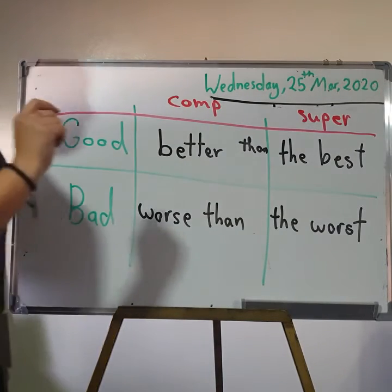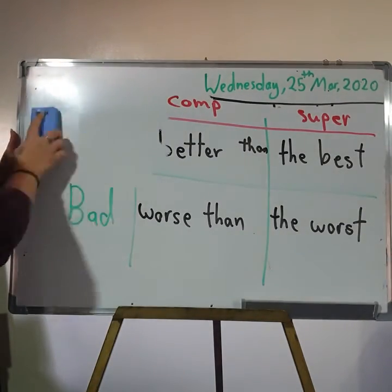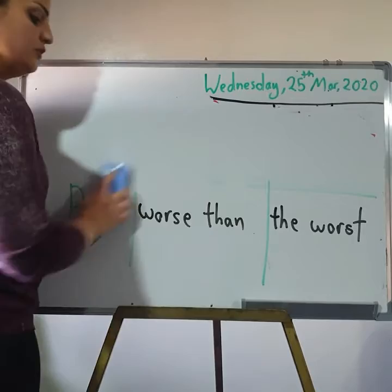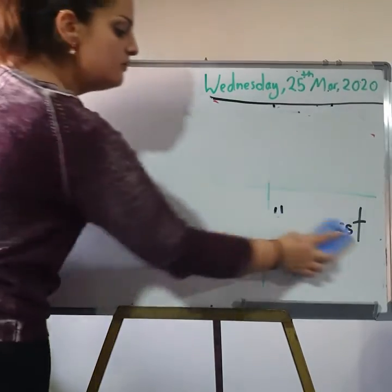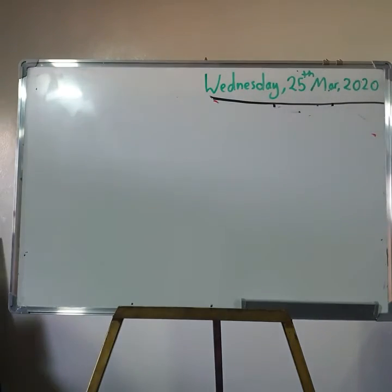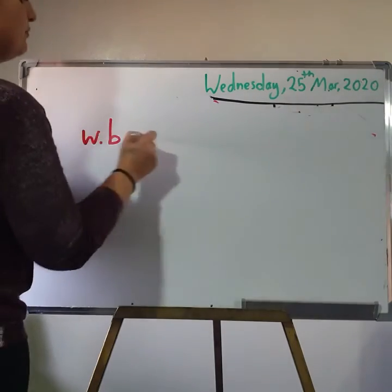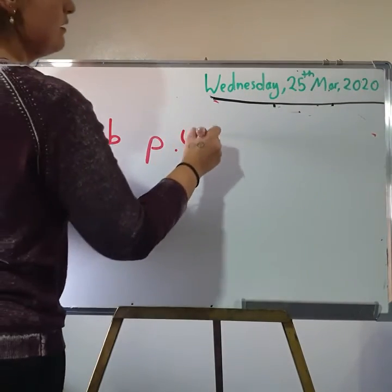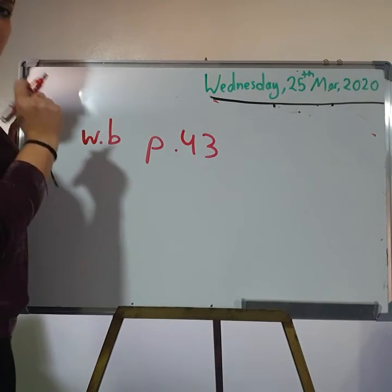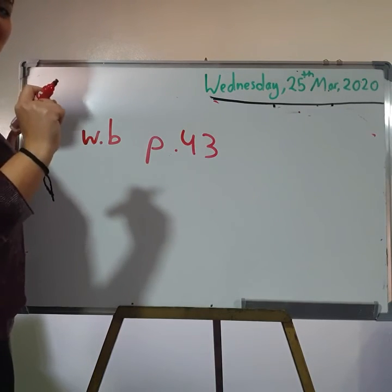Now, I think that we did the activities on the workbook, but we didn't correct them all. So I will remind you to do them. We did them on the book — I want you to do them on the workbook and send them to me so I can correct them. It's workbook page 43, okay? I want you to do this page and send it to me so I can correct it. See you next time.